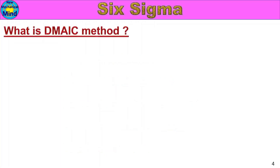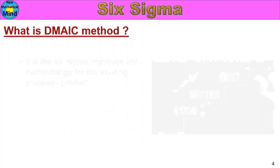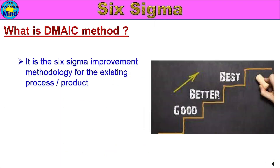First, what is DMAIC method? It is the Six Sigma improvement methodology for the existing process or product.